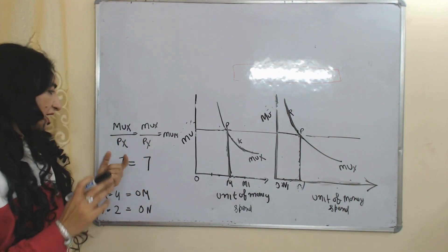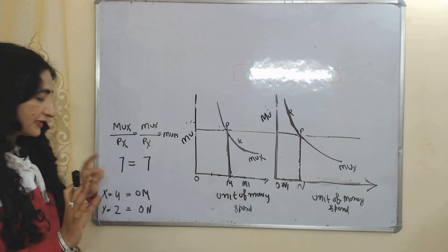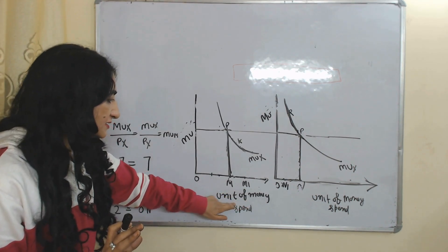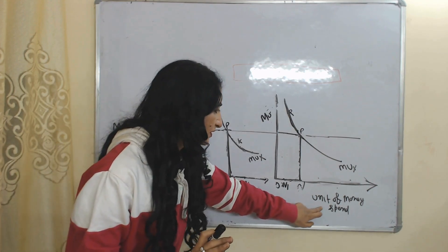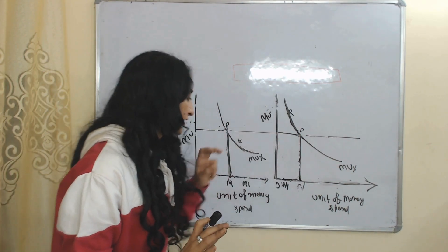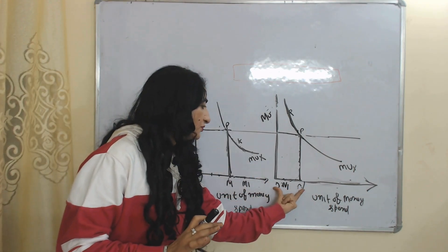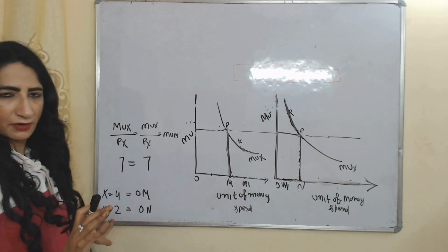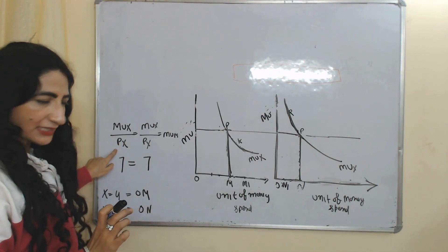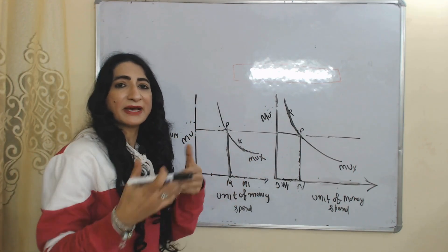Now we look at the diagram. As discussed, the consumer equilibrium point is where MUX/PX equals MUY/PY, both equal to 7. The consumer is buying 4 units of X and 2 units of Y. On the X-axis we have units of money spent on X and on Y. On the Y-axis we have marginal utility from X and marginal utility from Y. The consumer buys OM units of X, equal to 4 units, and ON units of Y, equal to 2 units. PM equals PN, meaning MUX/PX equals MUY/PY. This is the consumer equilibrium point — the best combination.